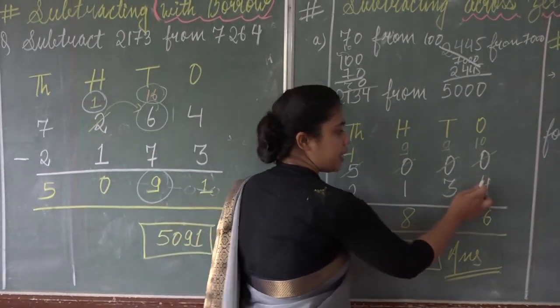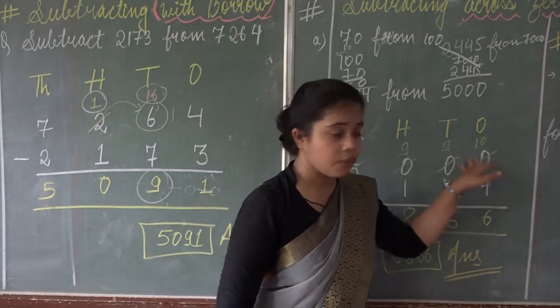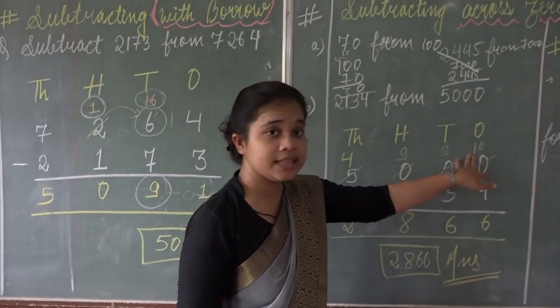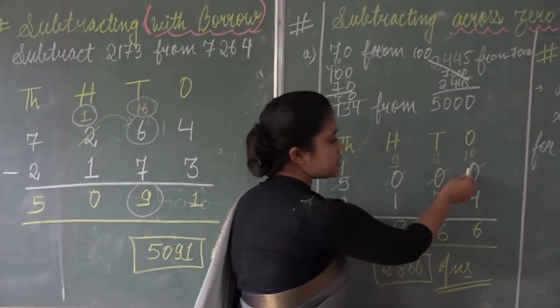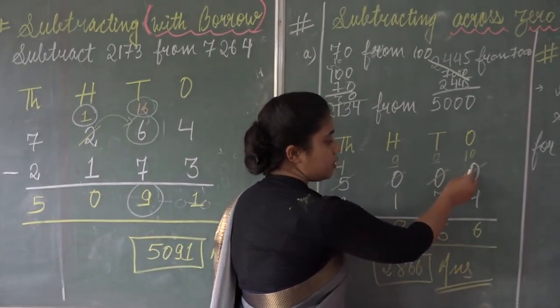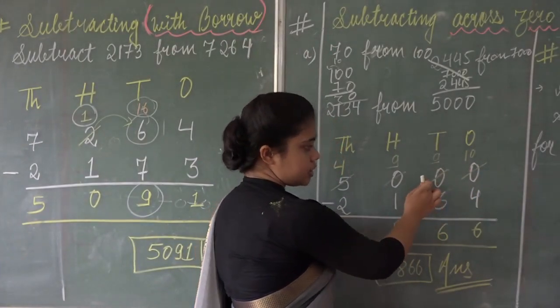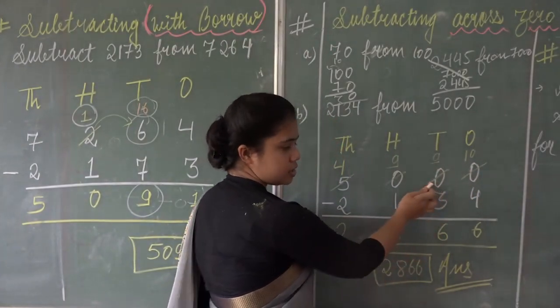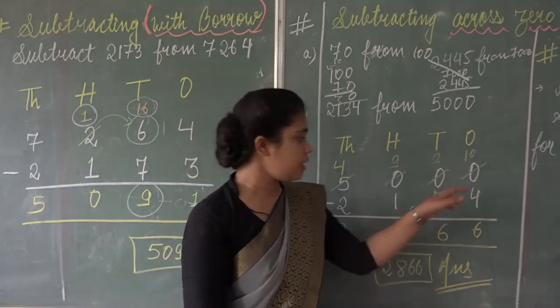Can you subtract 4 from 0? If you are not having anything, how can we do that? So this 0 goes to the next 0, but that 0 says I don't have anything either — how can I give you?